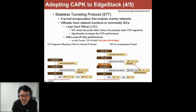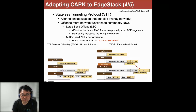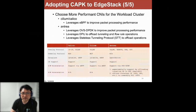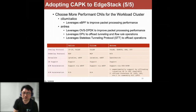STT solves this problem in a smart way. With STT, an extra vSwitch metadata header is added, and by reading this metadata the NIC card can still perform TCP Segmentation Offload, just as it normally would. OVS already supports the STT protocol. So why not use STT to set up the workload cluster CNI protocol?